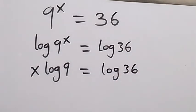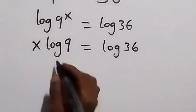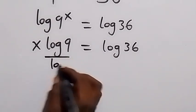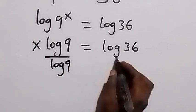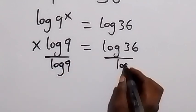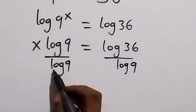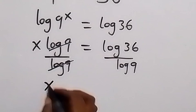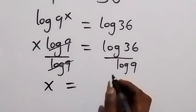In the next step, we can divide both sides by log 9. So divide this side by log 9, also divide this side by log 9, and then we have log 9 canceling each other here. What we have left here is x, which is equal to...